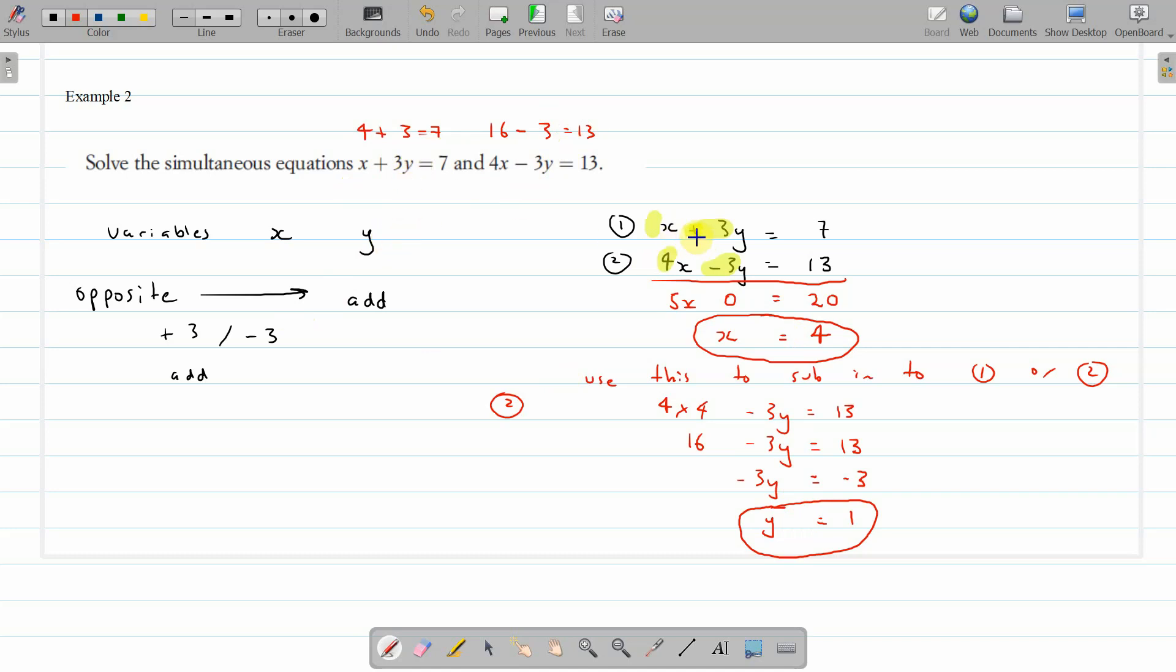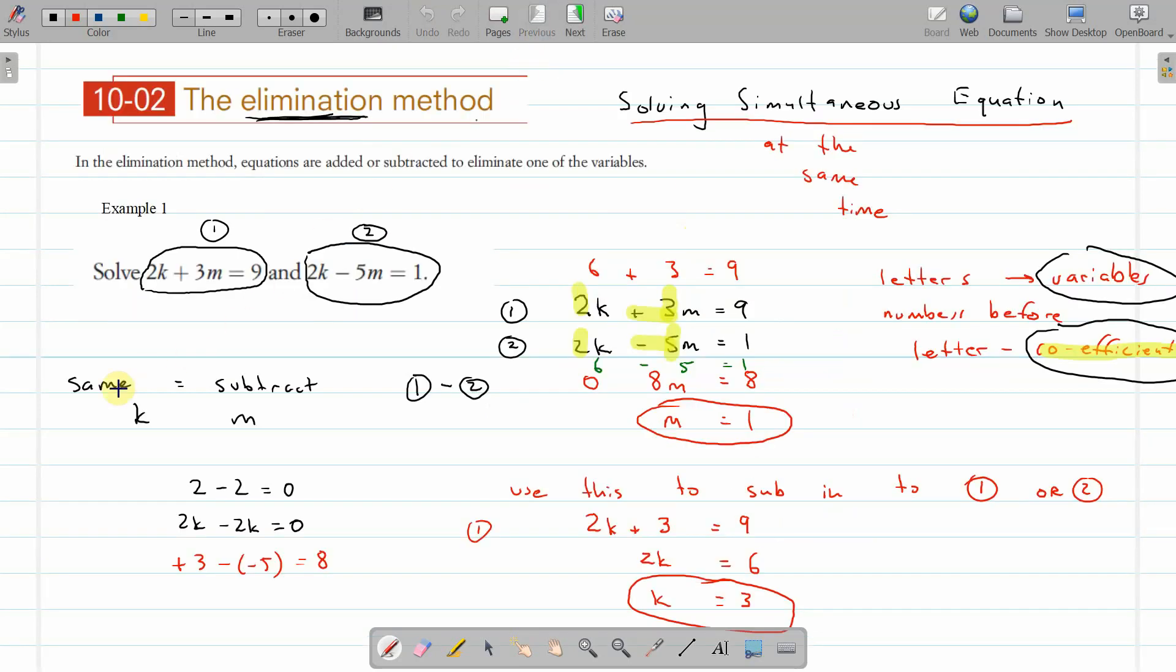When we have the coefficients are opposite, which means we have to add the two together. This one, coefficients were the same. We had a 2k and a 2k, they were the same. And when they're the same, we subtract one from the other.